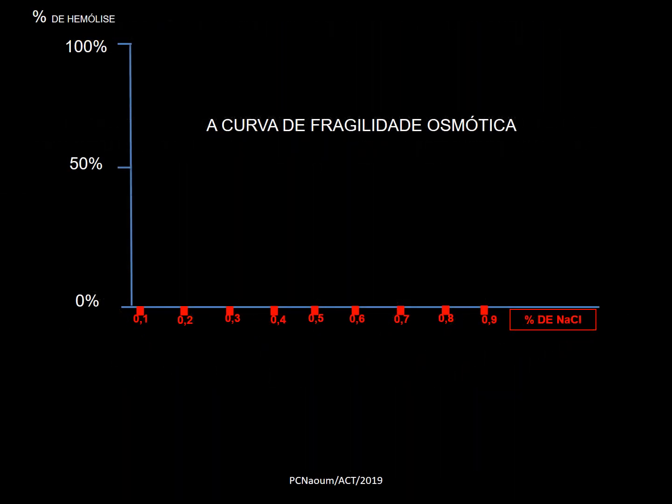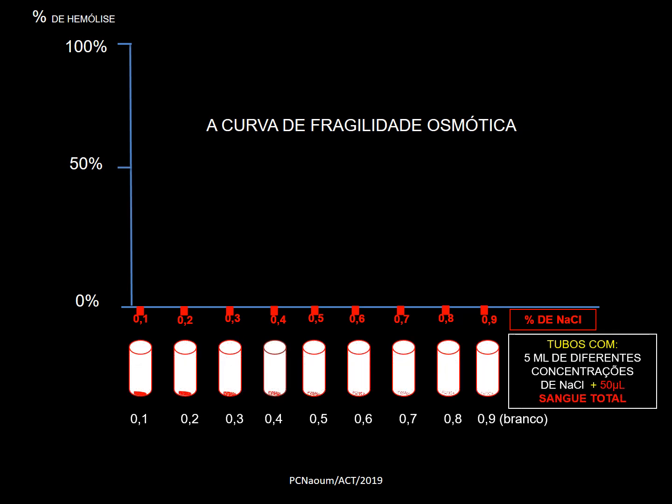Aqui estou mostrando o gráfico e agora colocando os tubos. Em cada tubo coloca-se 50 microlitros de sangue total — uma manchinha vermelha no fundo do tubo. Com pipeta muito sensível, coloca-se 50 microlitros igualmente em cada tubinho. Em seguida, faz-se agitação por inversão — por exemplo, 3 inversões por tubo — e deixa-se em repouso por 10 a 20 minutos, seguido de centrifugação.